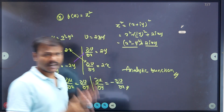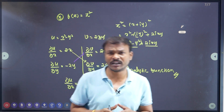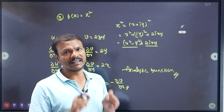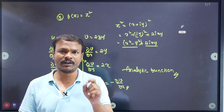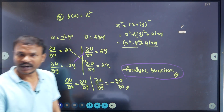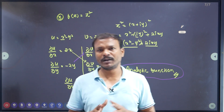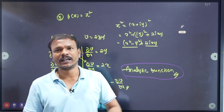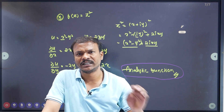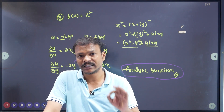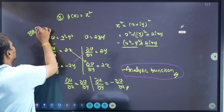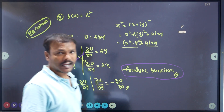So just check the CR condition: ∂u/∂x = ∂v/∂y and ∂u/∂y = −∂v/∂x. If satisfied, f of z is an analytic or holomorphic function. The remaining example problems and practice problems are available in the app — download the Jai Shankar Academy app. For JL Maths online courses, call 388-560-7060. Thank you, all the best.